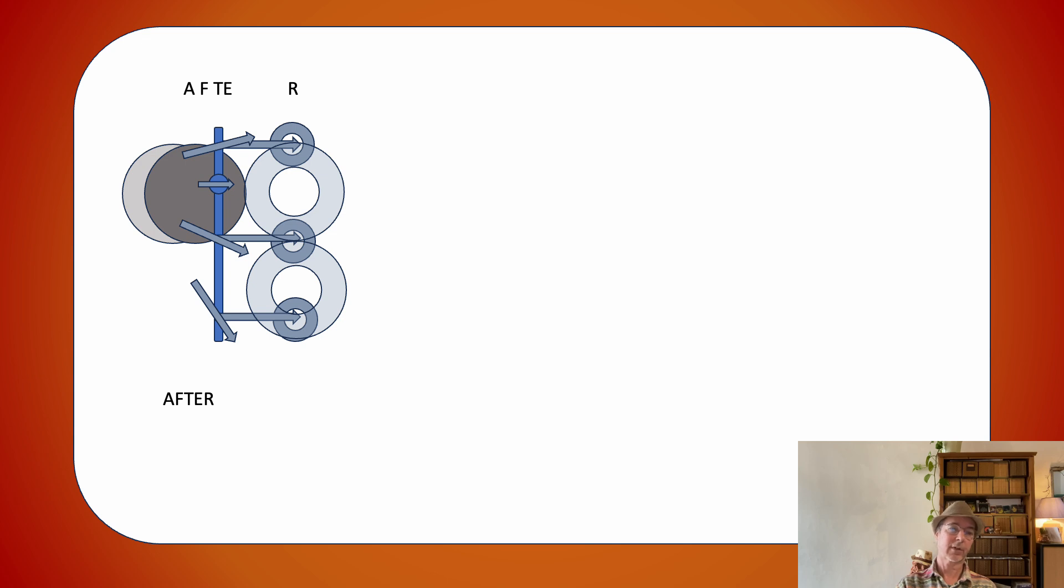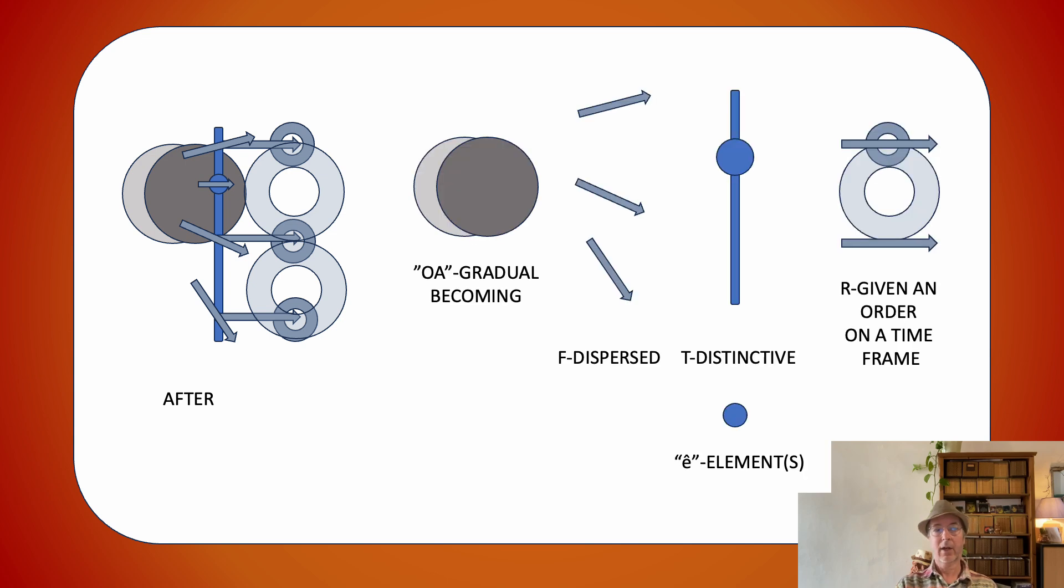After is more difficult. The first sketch of this and why it is more difficult, there are all different letters in different directions. The A is what is gradually becoming, so the beginning of after is what is already gradually becoming. It's even more like that, the F is dispersed into the different directions, what is gradually becoming.